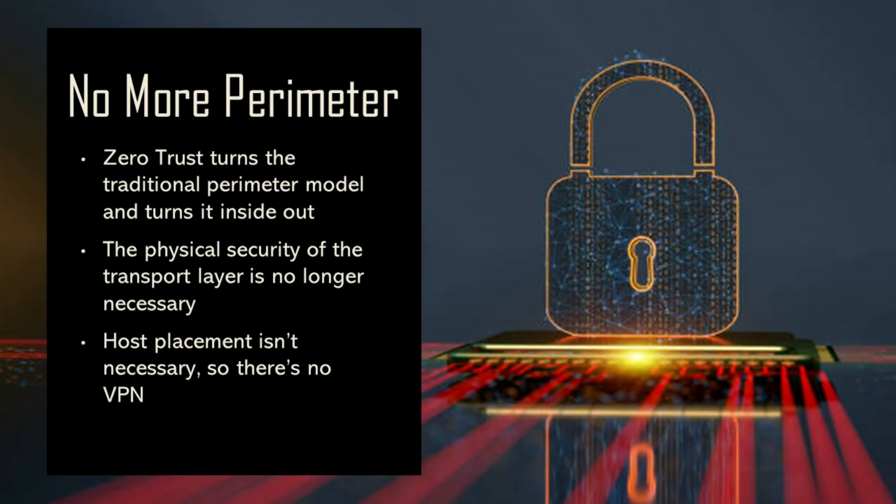Traditional perimeter network topology varies from zero-trust—a zero-trust network takes the perimeter model and turns it inside out. The physical security of the transport layer isn't necessary anymore. Additionally, there won't be a need for VPNs since host placement isn't a factor. VPNs aren't safe; some say they're just a super secure backdoor into the network, and all it takes is for a threat actor to get hold of the user's credentials to remotely access a company's network.